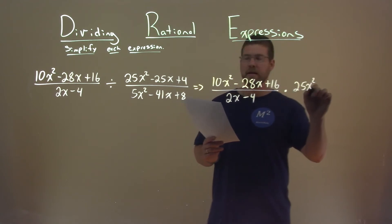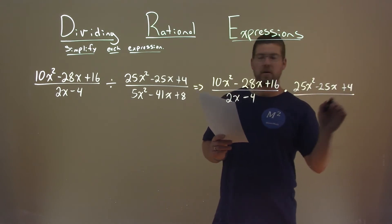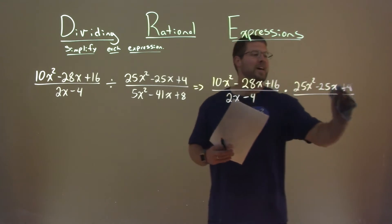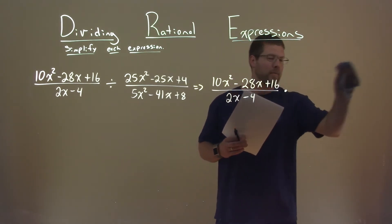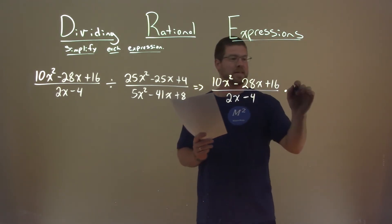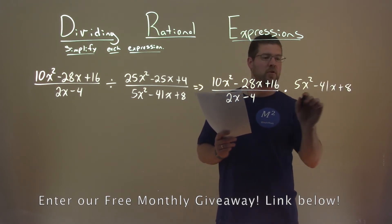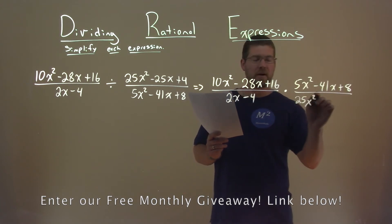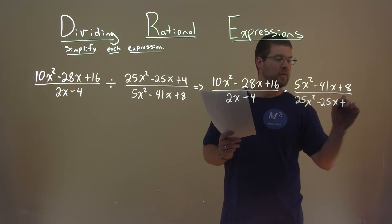25x squared minus 25x plus 4 here over, oops, I rewrote this top one. Well, if you saw that and were wondering what I was doing, let me know down below, but I caught it. Remember, like I said, we're flipping the second part. So 5x squared minus 41x plus 8 is the numerator, and the denominator is 25x squared minus 25x plus 4.